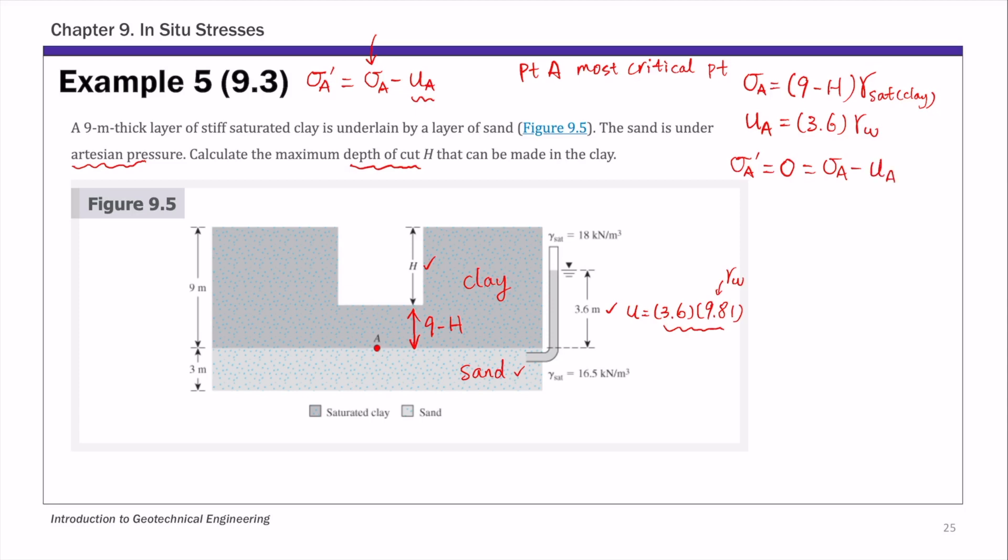If you substitute these two expressions, you have 9 minus H times saturated unit weight of clay, which is 18, minus 3.6 times unit weight of water in SI system, 9.81. And this whole thing equals to zero.